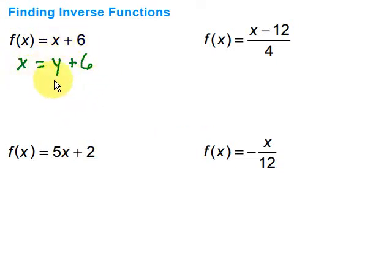Then I want to solve this for y. So to do that I can subtract 6 here and subtract 6 on this side. So then I'm going to flip this around so I have y equals x minus 6. Now my inverse function notation is this and how we say it is the f inverse of x is equal to x minus 6.